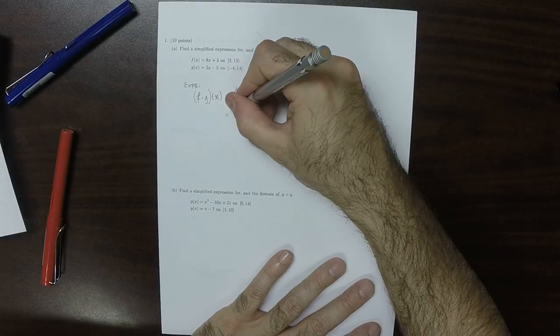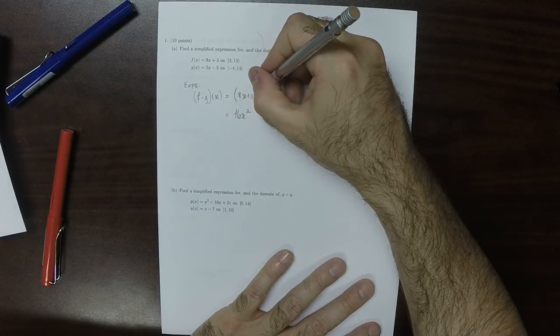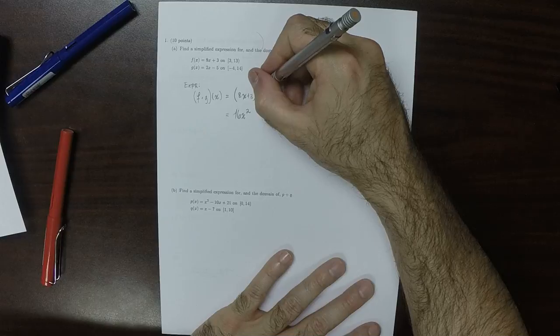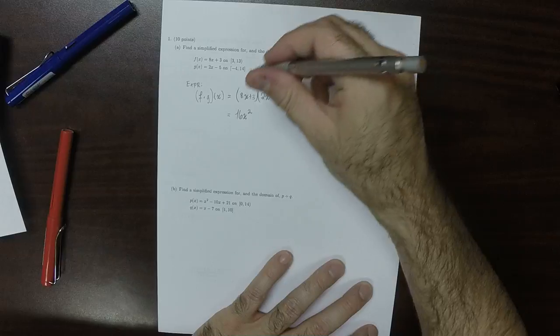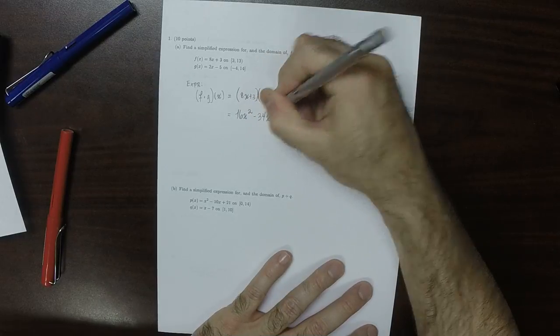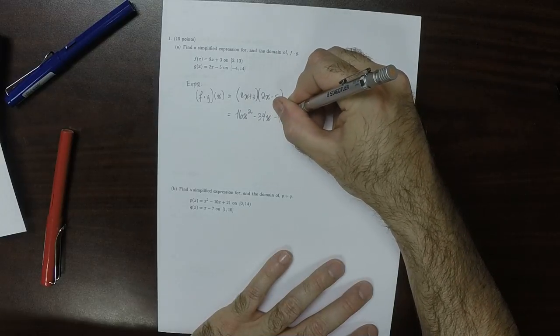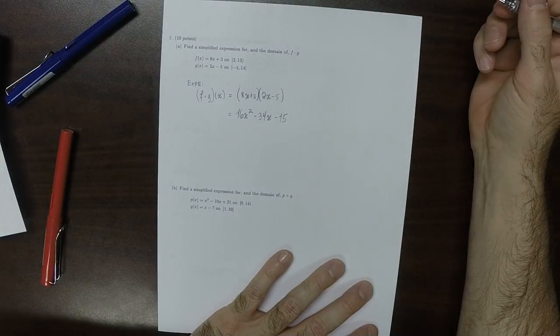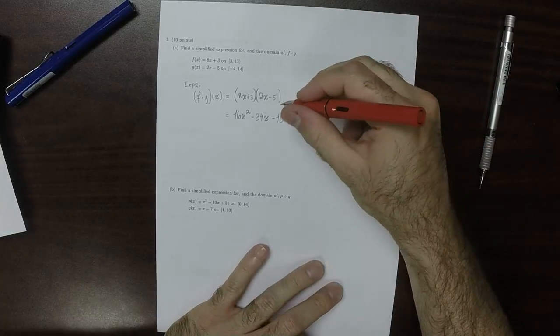That would be 16x squared, and then plus 6x minus 40x, so that would be minus 34x, and then minus 15. So that's using FOIL.